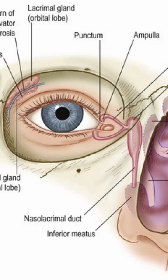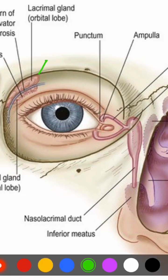The lacrimal gland has two parts: an upper large orbital part and a smaller palpebral part, which are separated by the levator palpebrae superioris muscle. The orbital part becomes continuous with the palpebral part along the lateral margin of the levator palpebrae superioris muscle.